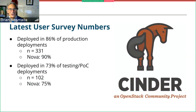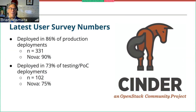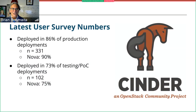The latest survey numbers — as far as who's using Cinder — it's deployed in 86% of production deployments, based on the 2019 survey with 331 respondents. Nova was running at 90%, so we're pretty up there, because I can't imagine how you're going to run OpenStack and not include Nova. As far as testing and proof-of-concept deployments, we're deployed in about 73% of those. Nova's at 75%, so we're almost everywhere in OpenStack.